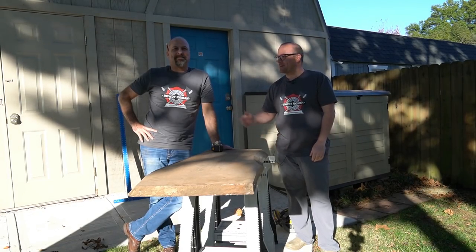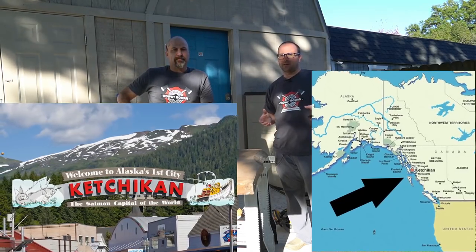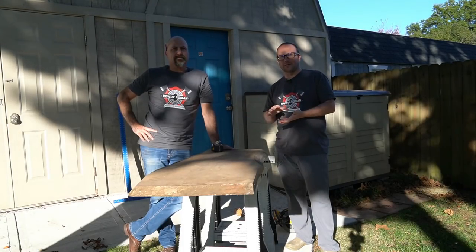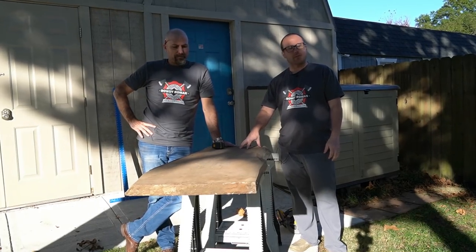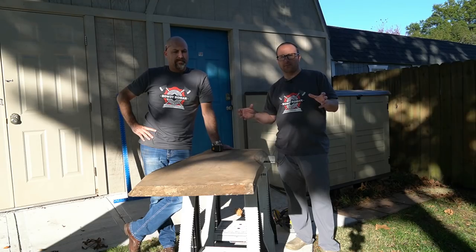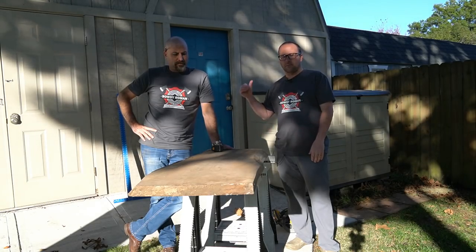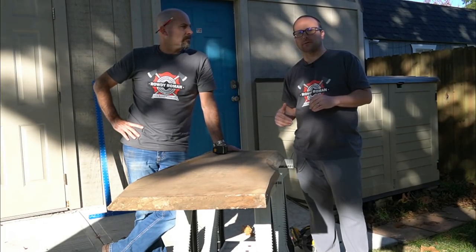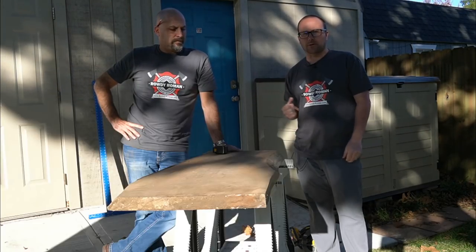Hey guys, it's Ben with Meyers Woodshop. We have Pete and we're supporting the RowdyRoman.com shirts - we're matchies today. We're going to do something cool. Pete's brother lives in Ketchikan, Alaska. The mountain ranges give a lot of cool 3D topography. We decided to grab a slab of what we think is oak and do a pretty big 24 by 12 topography map of the Ketchikan area. We're going to cut this down, take it to the CNC, and everything else will be done on the Onefinity. I'll show you how I programmed this in Vectric and how Pete turned the map into an STL.